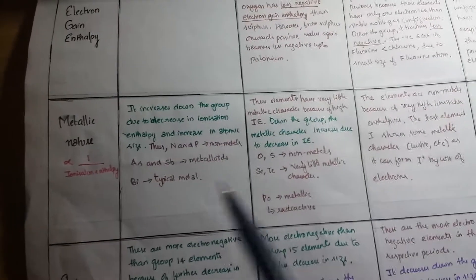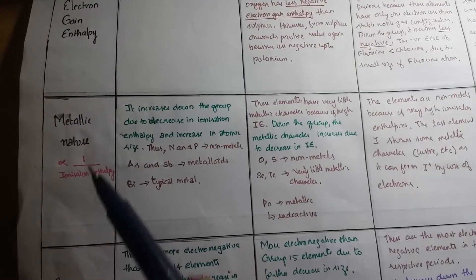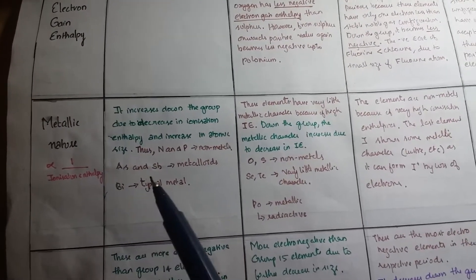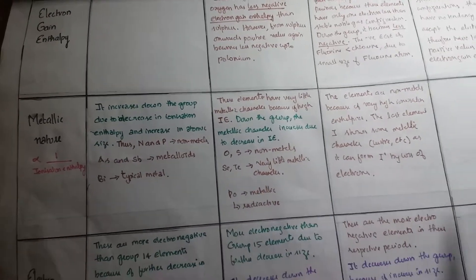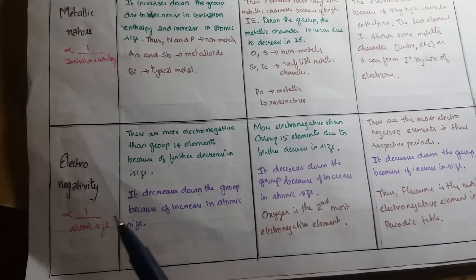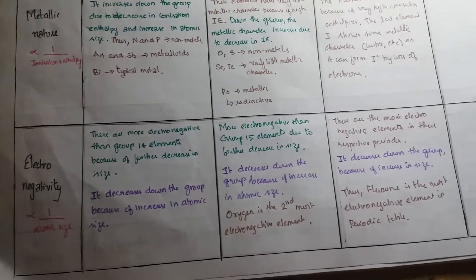And then we have metallic nature which is inversely proportional to ionization enthalpy. Next we have electronegativity which is also inversely proportional to atomic size.